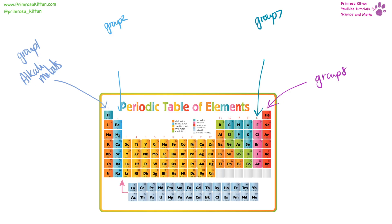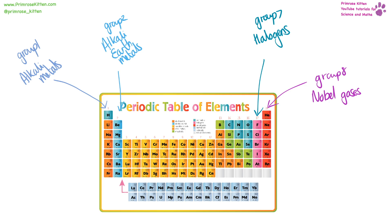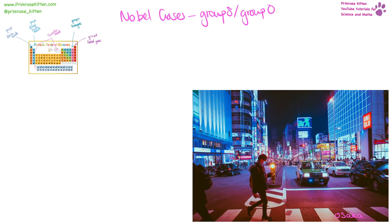Group number one are also known as alkali metals. Group number two are the alkaline earth metals. Group seven are the halogens and group eight are the noble gases. The big chunk in the middle are the transition metals. The group on the far right are group eight, or group zero — these are the noble gases.